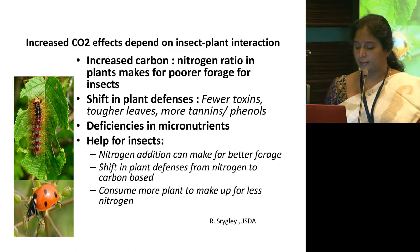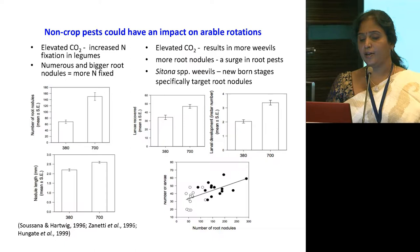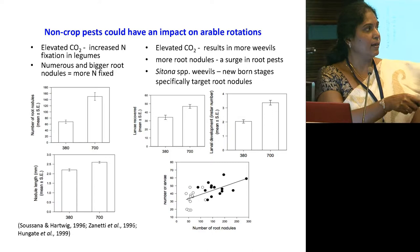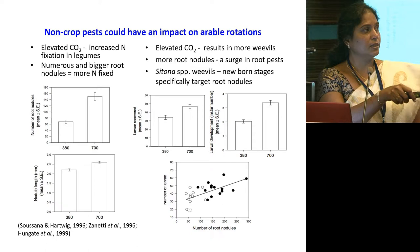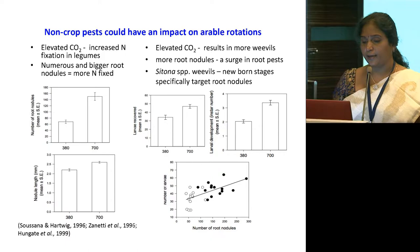Non-crop pests could also impact arable rotation. For example, with elevated CO2 especially in legume crops, this will increase nitrogen fixation, with numerous and bigger root nodules and more nitrogen fixed. The number of root nodules is expected to almost double with a doubling of CO2, with nodule length also increasing. Simultaneously, as the number of root nodules increases, the number of insects also increases linearly. This kind of relationship has been established through recent research.